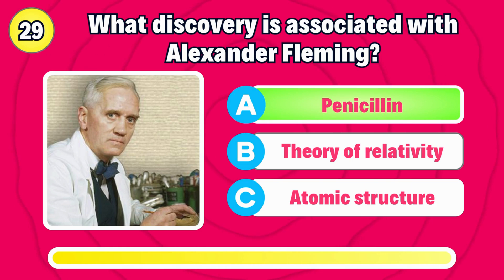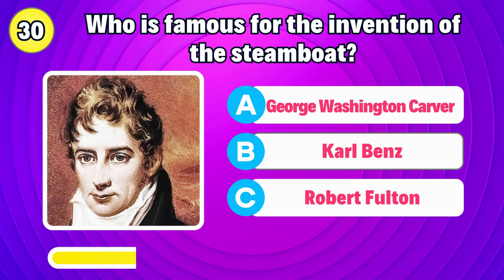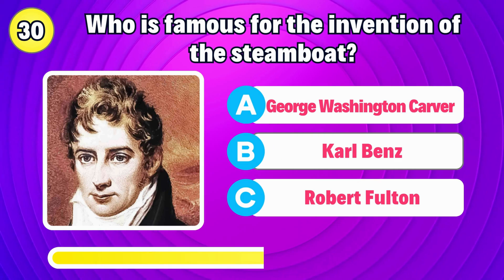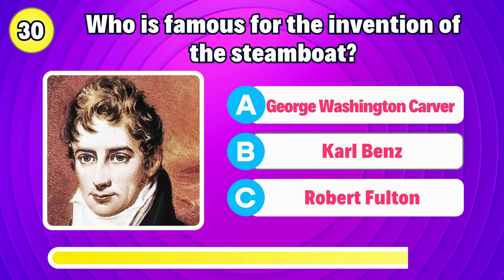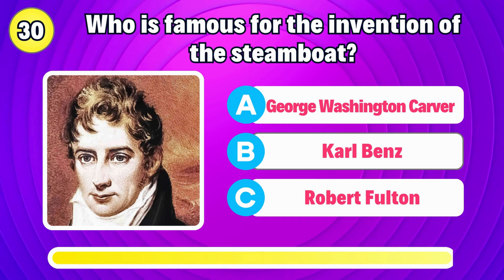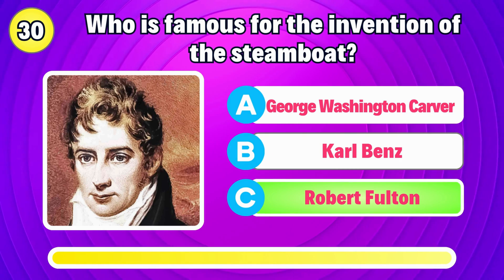What discovery is associated with Alexander Fleming? Correct, it's penicillin. Who is famous for the invention of the steamboat? Right, it's Robert Fulton.